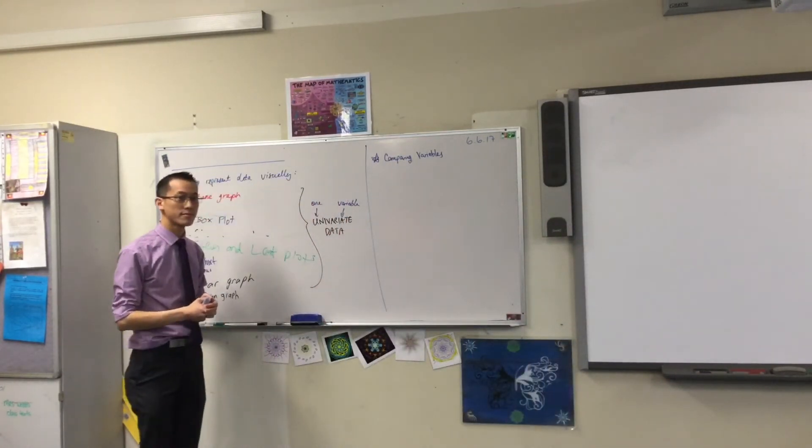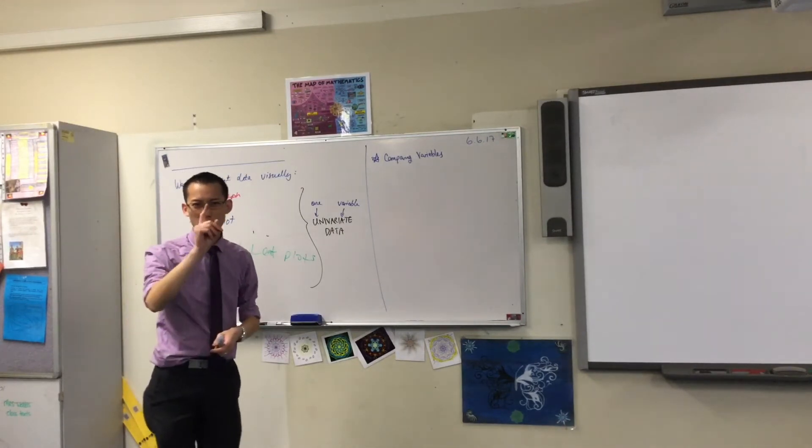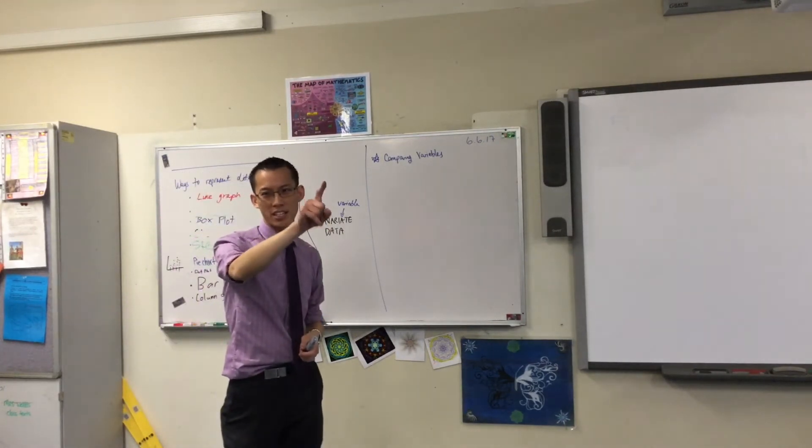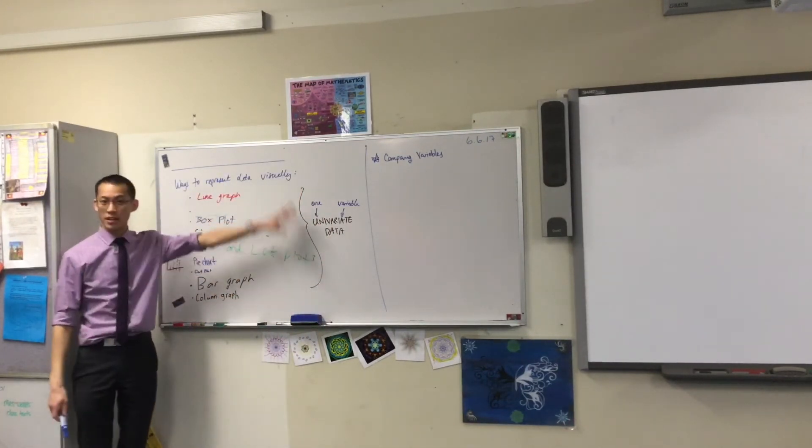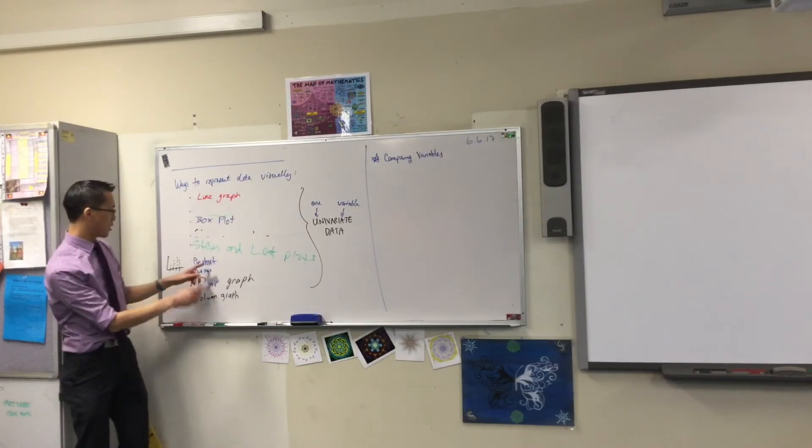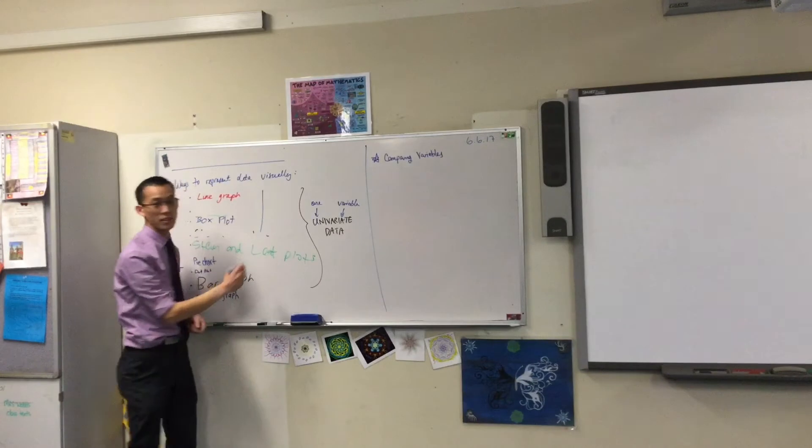Team sports. What's the variables you're comparing? Well, you've got two teams. You can compare the different stats between them. Okay. Now, let's take this idea. I want to explore it a little bit. Depends. Remember I said this is univariate data, right? We've got stem and leaf plots here. Do you remember?